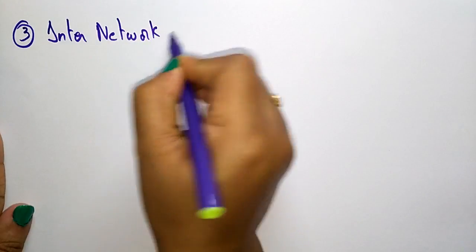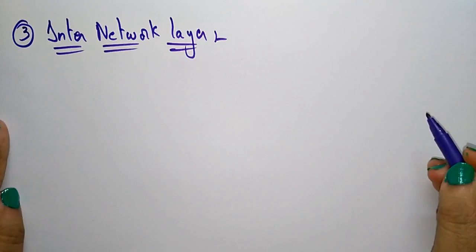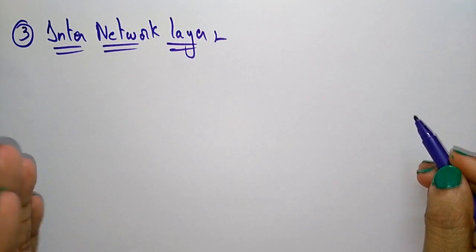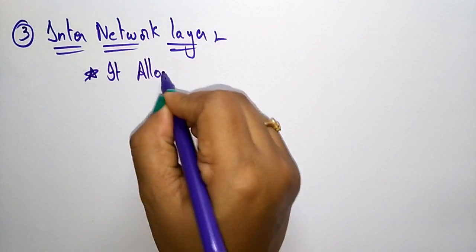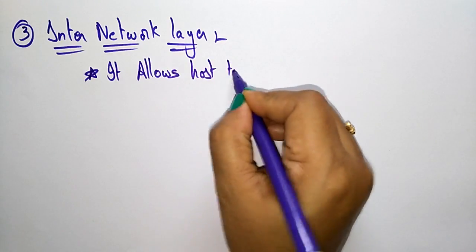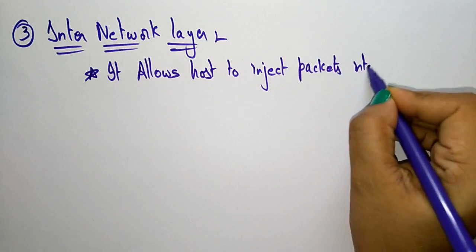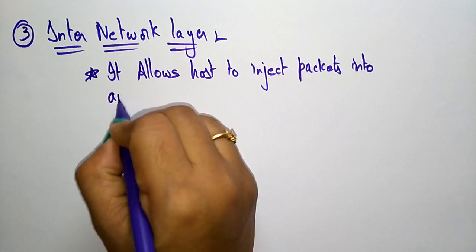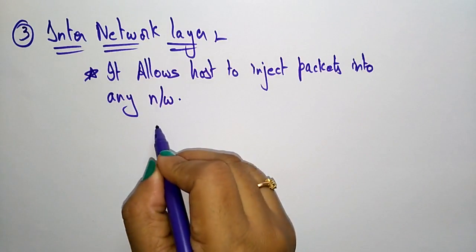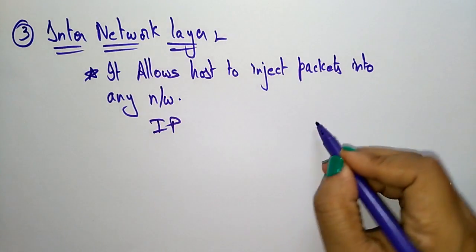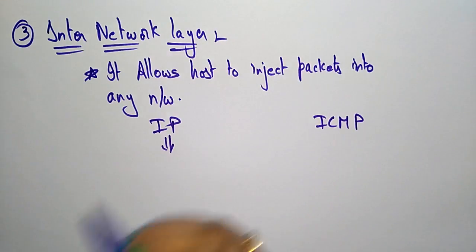The inter-network layer allows hosts to inject packets into any network. The protocols used in the inter-network layer are IP — Internet Protocol — and ICMP.